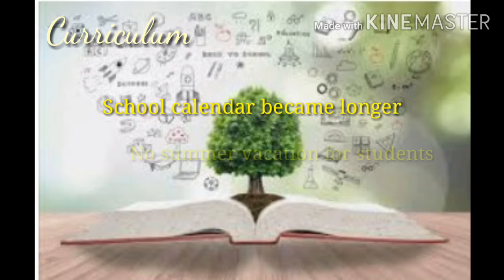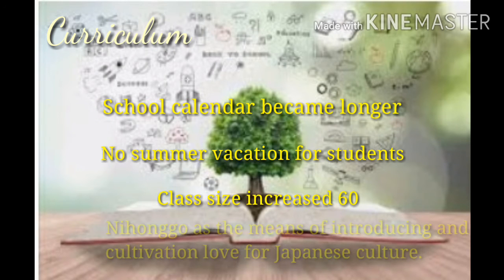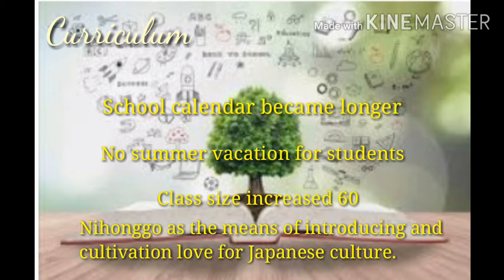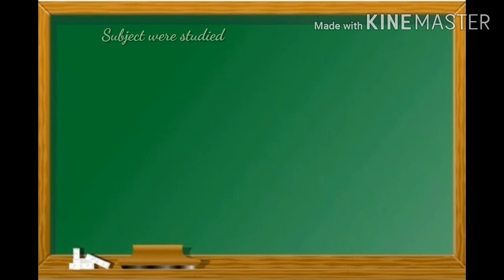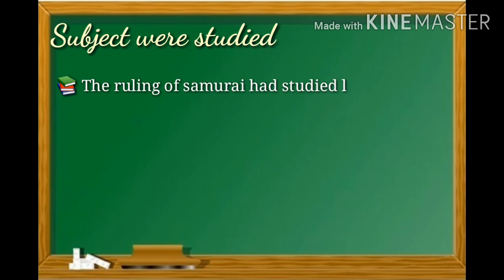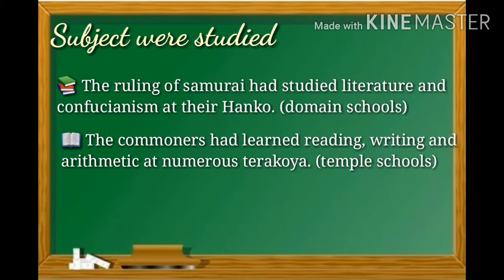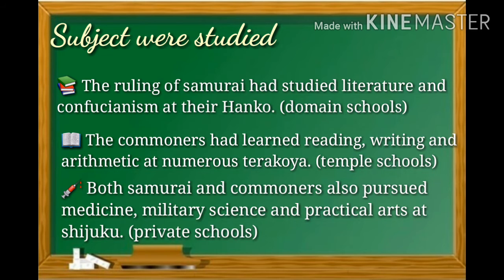The school calendar became longer with no summer vacation for students. Class size increased to 60. Nihongo was used as a means of introducing and cultivating love for Japanese culture. Subjects studied included literature and Confucianism at Erhanko, the domain schools for the ruling samurai.